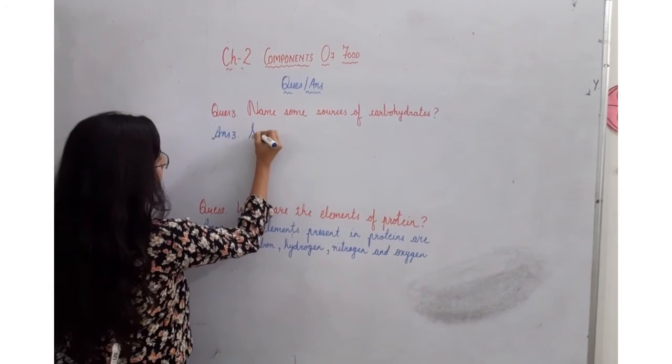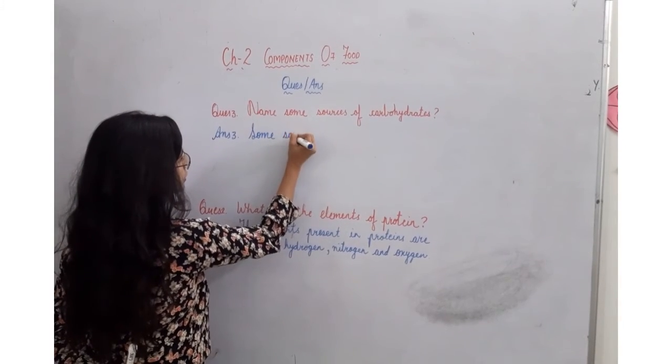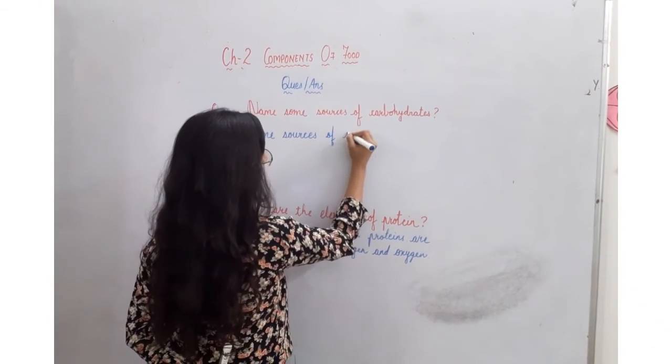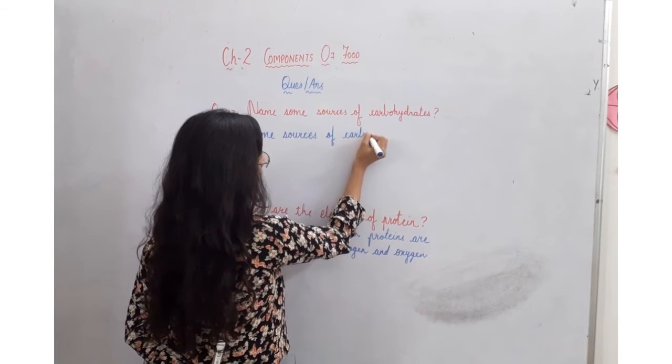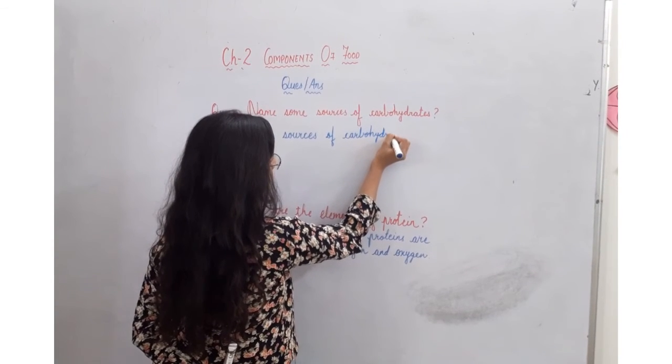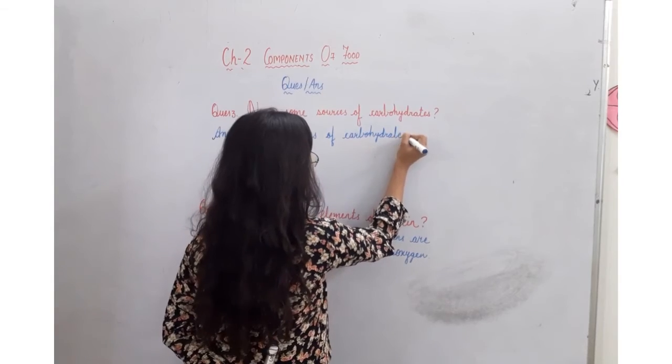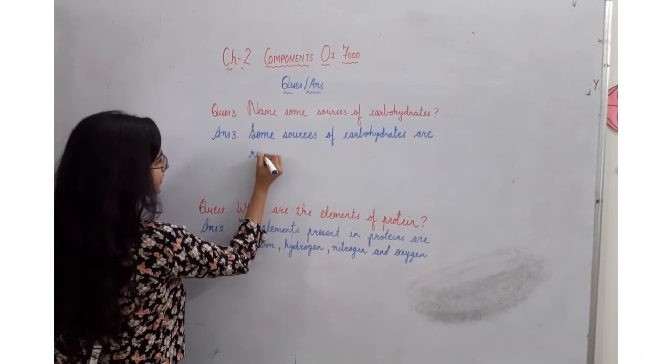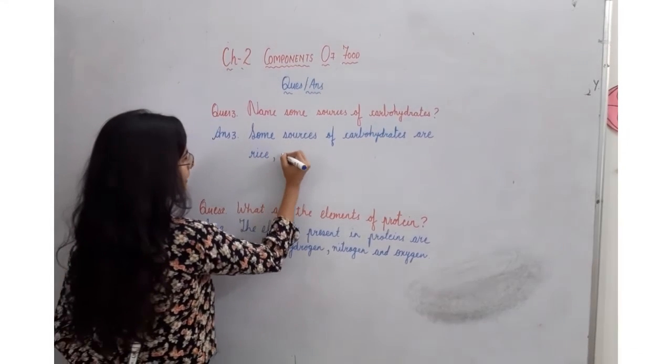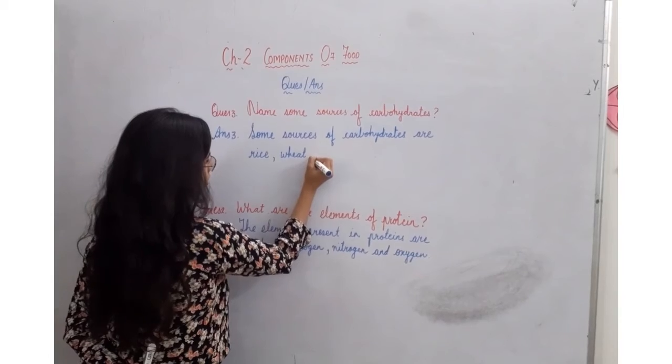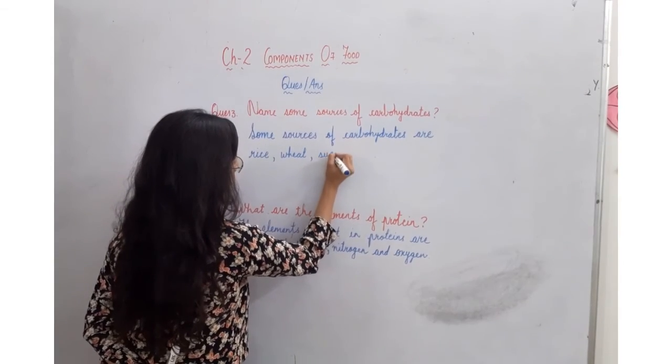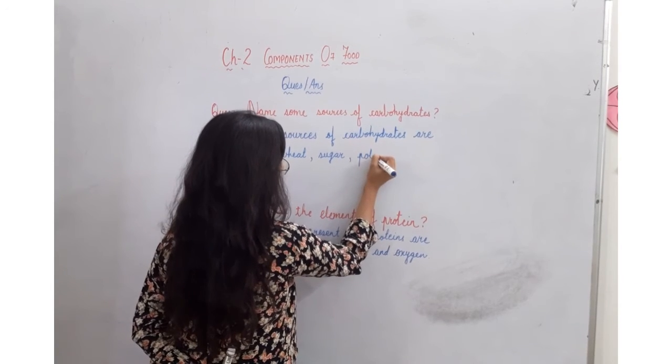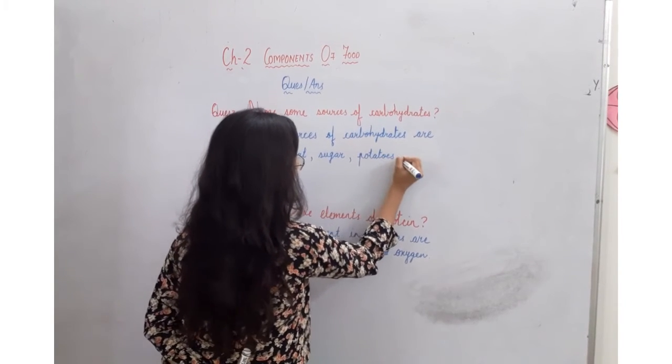Some sources of carbohydrate are rice, wheat, sugar, potatoes, etc.